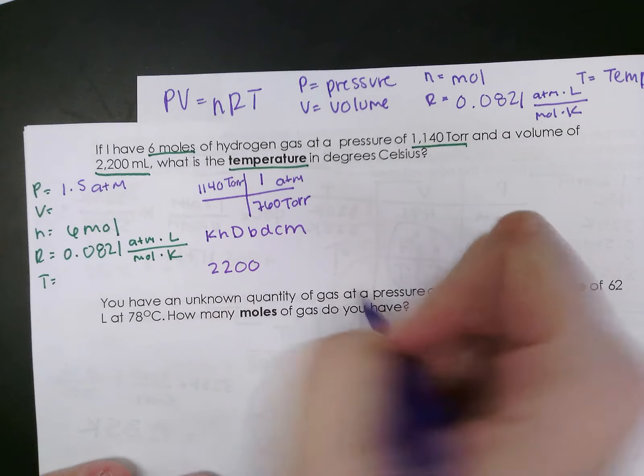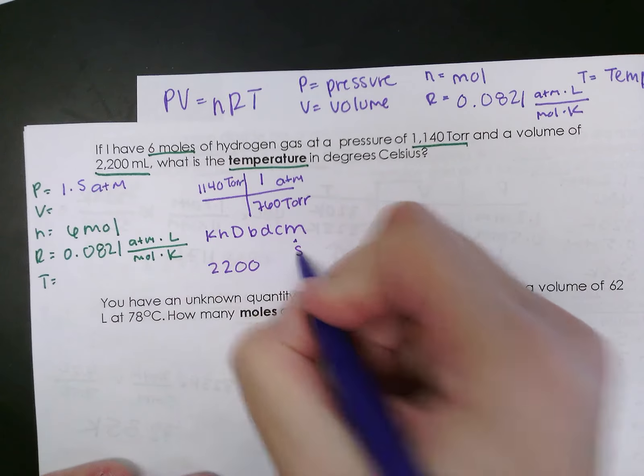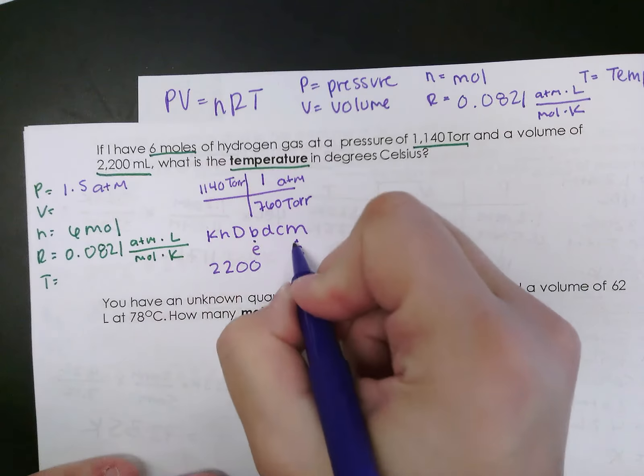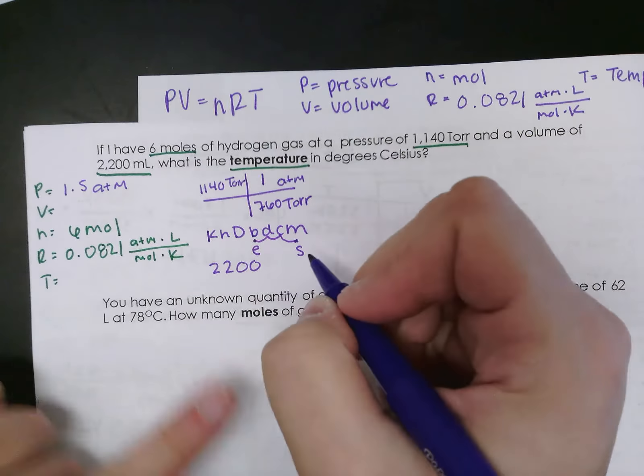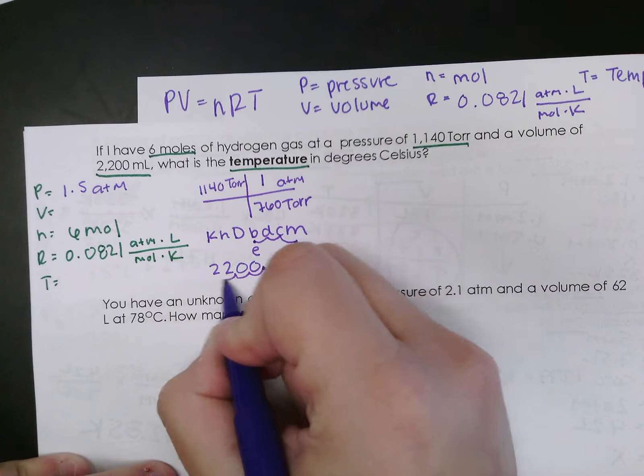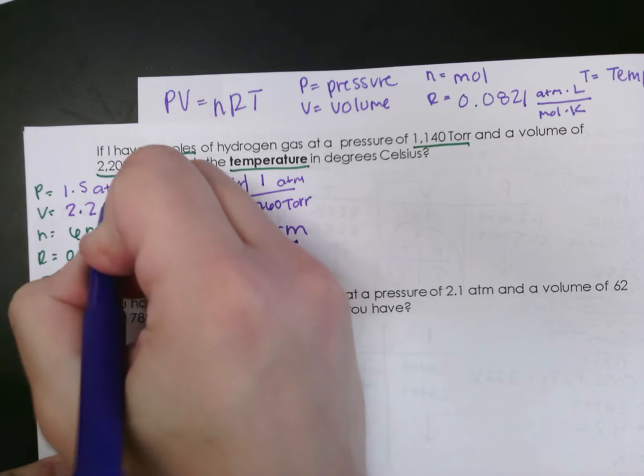We've got 2,200. I'm going from milliliters, this is my start, to liters. Remember, liters is a base, so this is going to be my end. So I'm going 1, 2, 3 letters to the left. So I have to remember that my decimal is right here, and I'm going to go 1, 2, 3 to the left. So my volume is 2.2 liters.